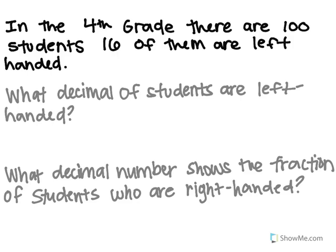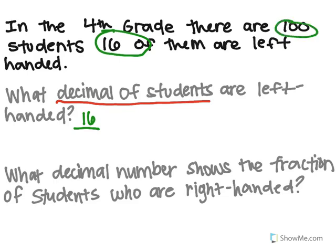This problem says, in 4th grade, there are 100 students, 16 of them are left-handed. It wants to know what decimal of students are left-handed. Well, if I look up here, there are 16 that are left-handed. So that means 16 out of how many students are left-handed? If I look up there, I can see it. 100. So here's my fraction. I have 16 one-hundredths. I need to turn it to its decimal form, because it wants the decimal of students. So my first step is to write the fraction, to figure out the fraction.